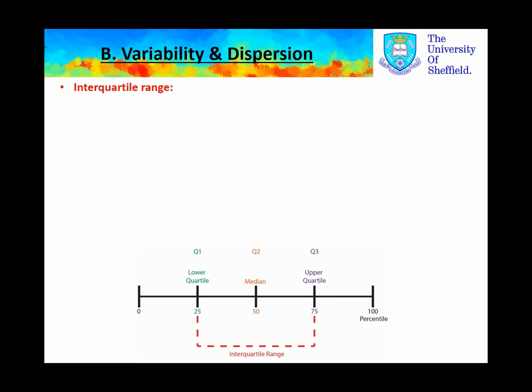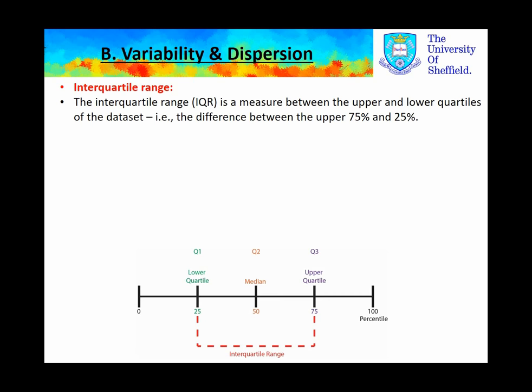The interquartile range is the difference between the upper quartile, or the 75th percentile of a data set, and the lower quartile, the 25th percentile of the data set. We refer to these as Q1 and Q3. Q1 is the lower quartile, Q3 is the upper quartile. The median is referred to as Q2. So by subtracting Q3 from Q1, we get the interquartile range.